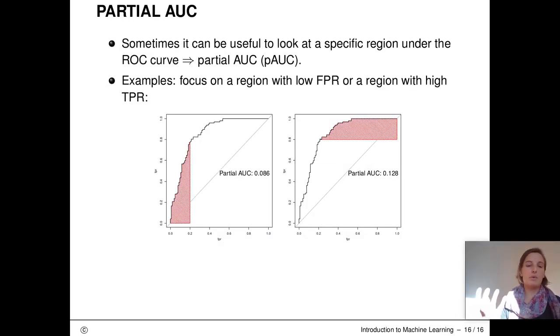In these cases, of course, we can also use something where we look at a specific region of the ROC curve where we can use the so-called partial AUC. The interpretation now, of course, changes, but the measure can still be used to compare the performance of models. In the figures here, we show two examples of partial AUC. The first focuses on a region with low FPR and the second on the region with high TPR.